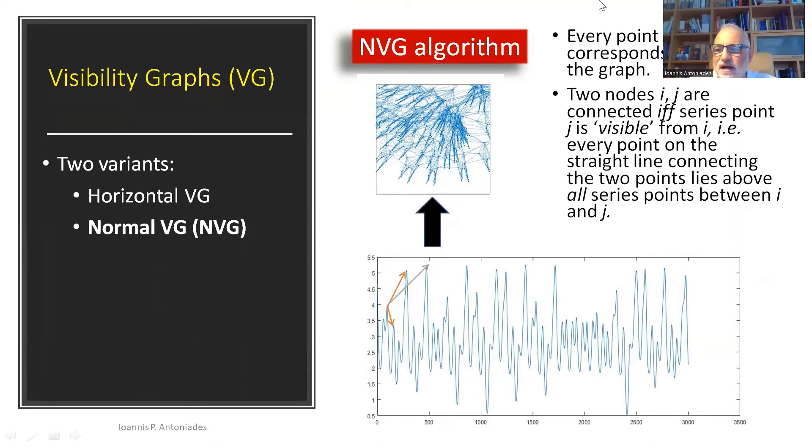So how does this algorithm go? Well, every point in the series corresponds to a node in the graph. And for example, you see the time series below. Every point is a node and two nodes are connected if and only if they're visible from each other.